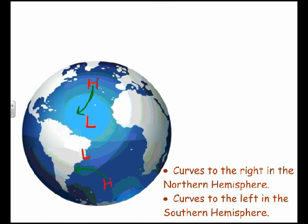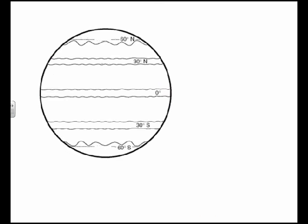This curving of winds to the right in the northern hemisphere and to the left in the southern hemisphere affects the way storms circulate and rotate. Because of these curving winds, it sets up certain wind belts or patterns of wind on the Earth.